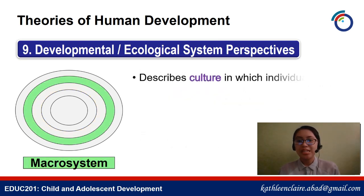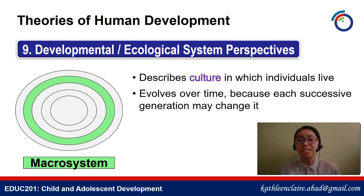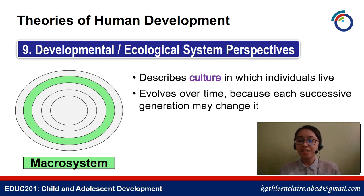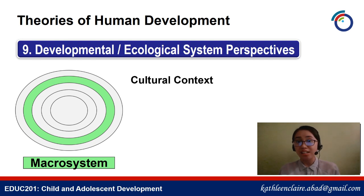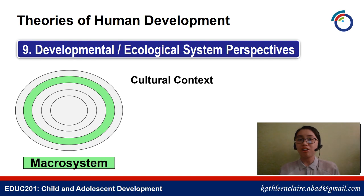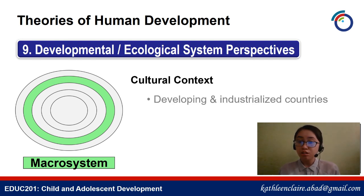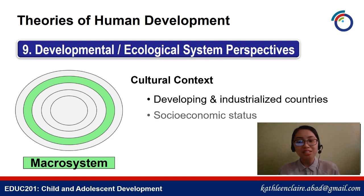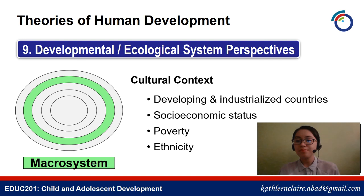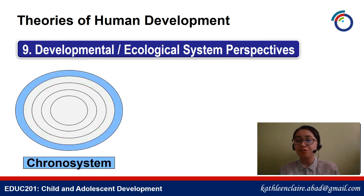Fourth is the macrosystem, which describes the culture in which individuals live. This evolves over time because each successive generation can change it. The cultural context includes the child, the parents, the school, the parents' workplace, developing and industrialized countries, socioeconomic status, poverty, and ethnicity. And last is the chronosystem — the patterning of environmental events and transitions over the life course, as well as socio-historical circumstances.